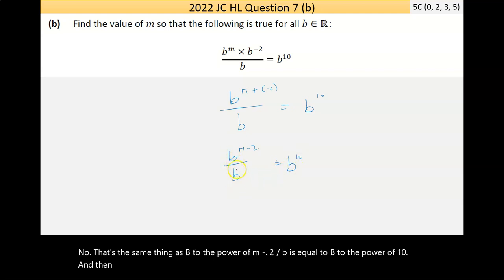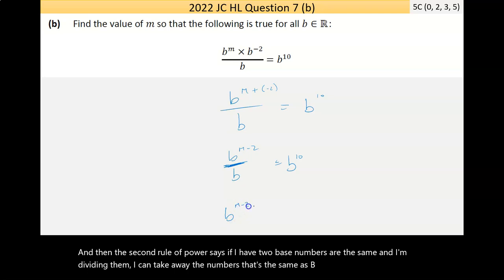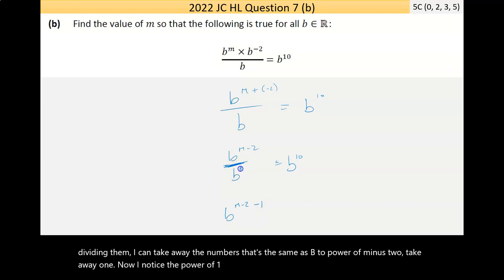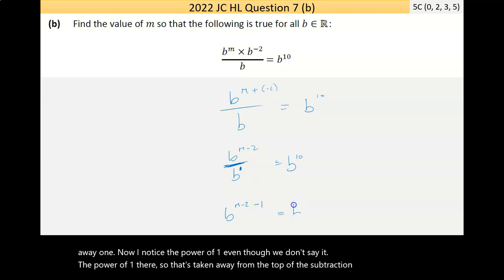Now then the second rule of powers says, if I have two base numbers that are the same and I'm dividing them, I can take away the little numbers. That's the same as B to the power of M minus 2, take away 1. Now I know there's a power of 1, even though we don't say it. There's a power of 1 there, so that's take it away from the top. That's a subtraction, is equal to B to the power of 10.